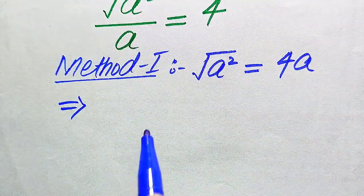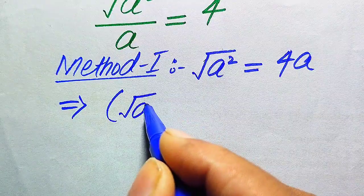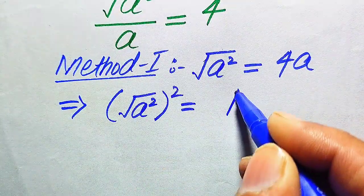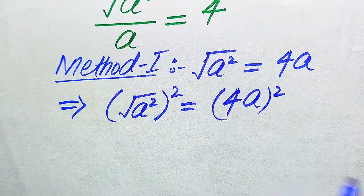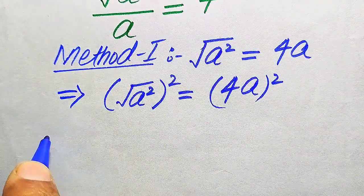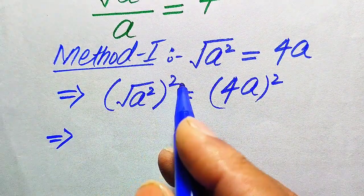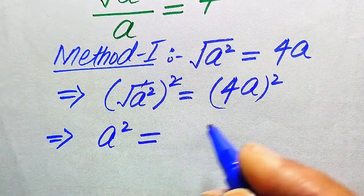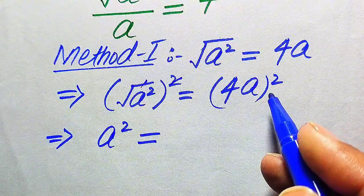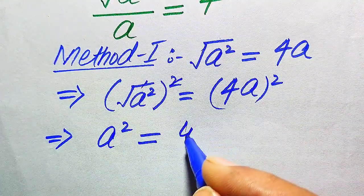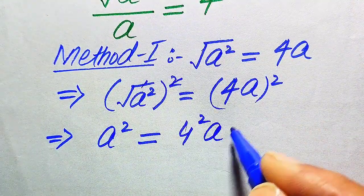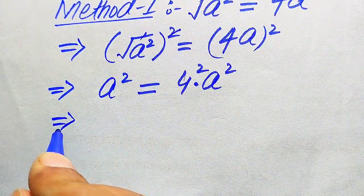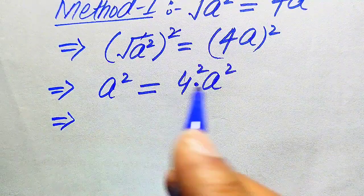Now we need to remove this square root sign from the left-hand side. In order to remove it, we need to take squaring on both sides. When we square both sides, the square and the square root cancel, and we get a² equals — on the right-hand side we apply the square separately to both values.